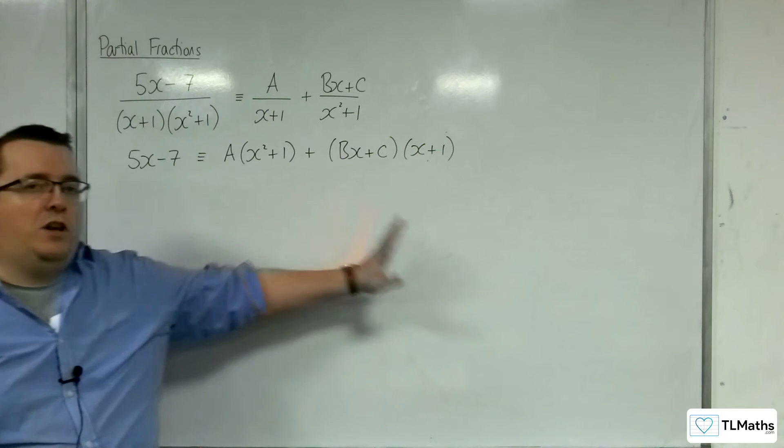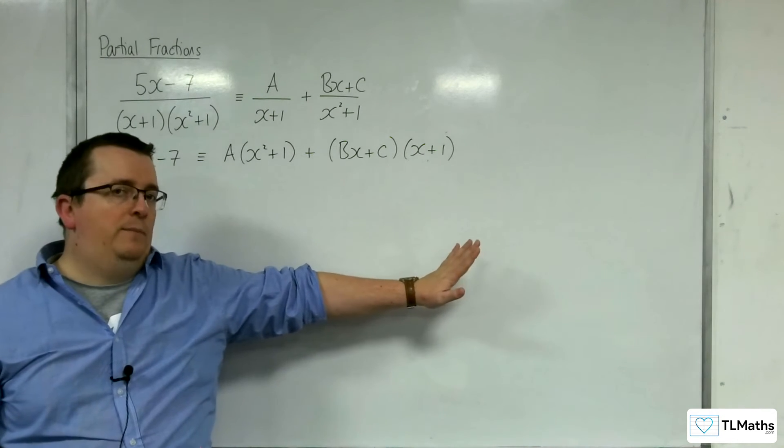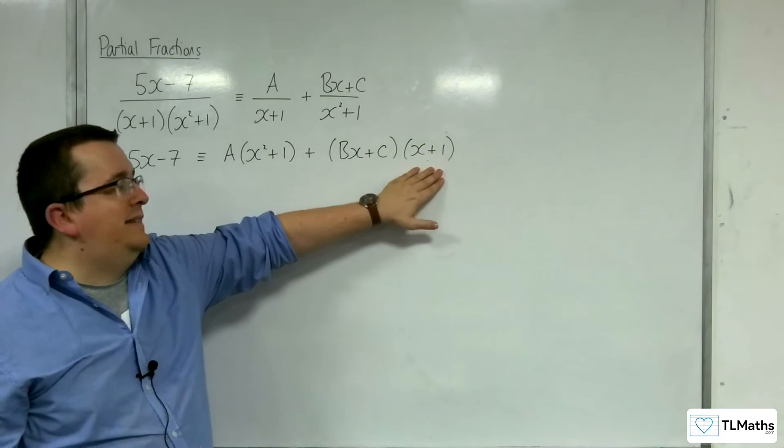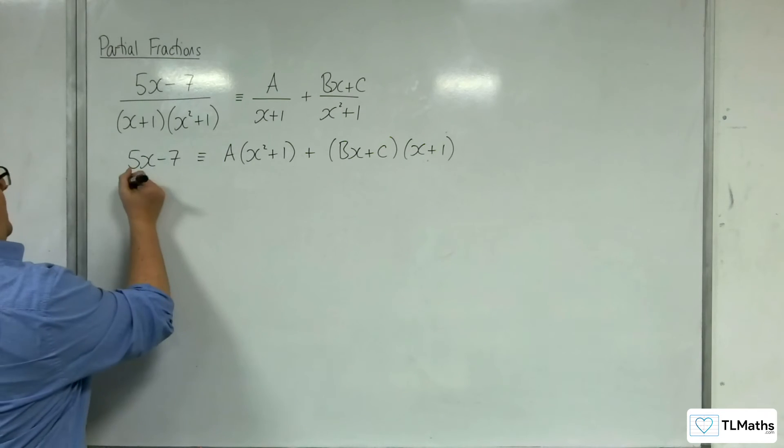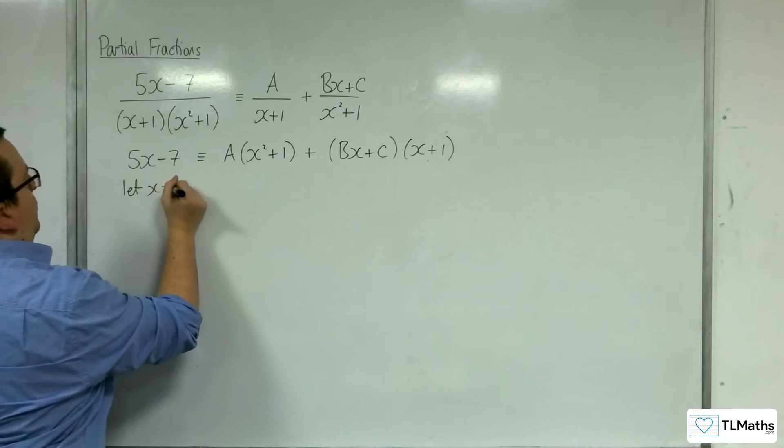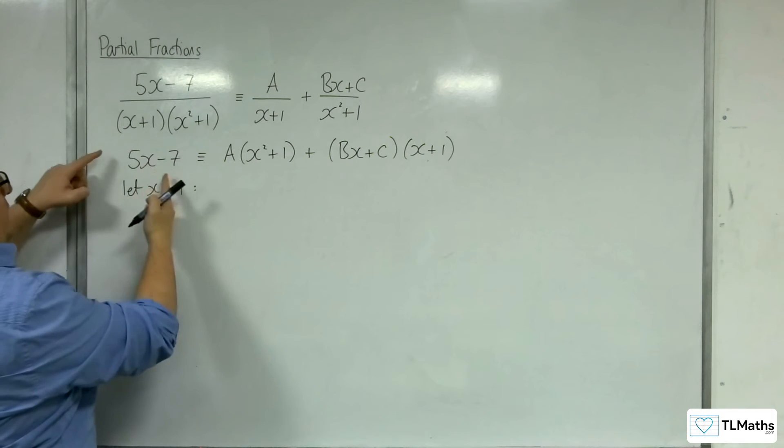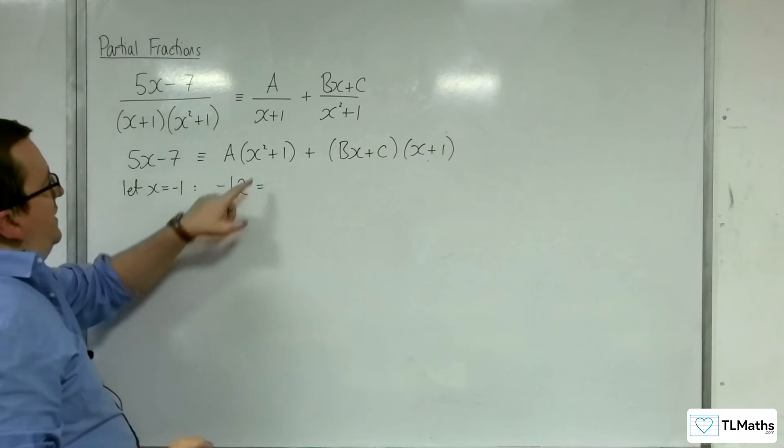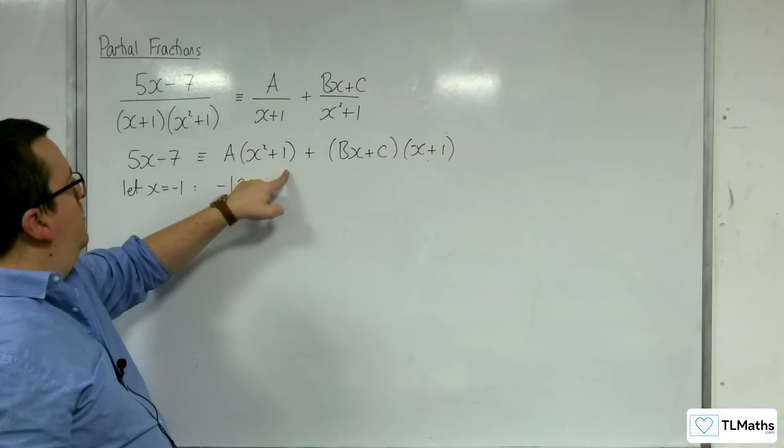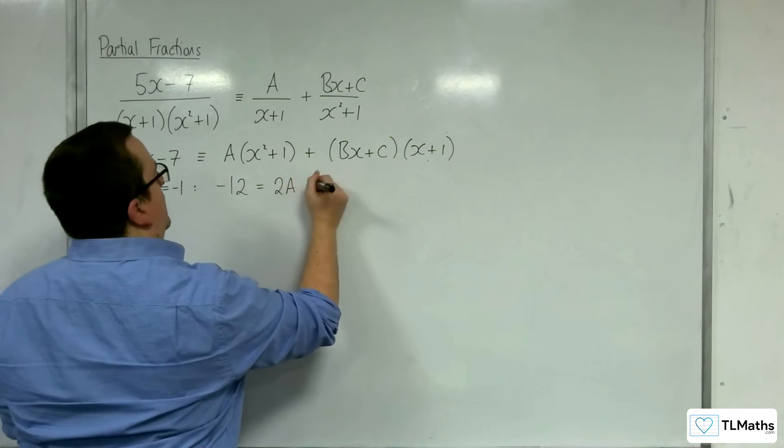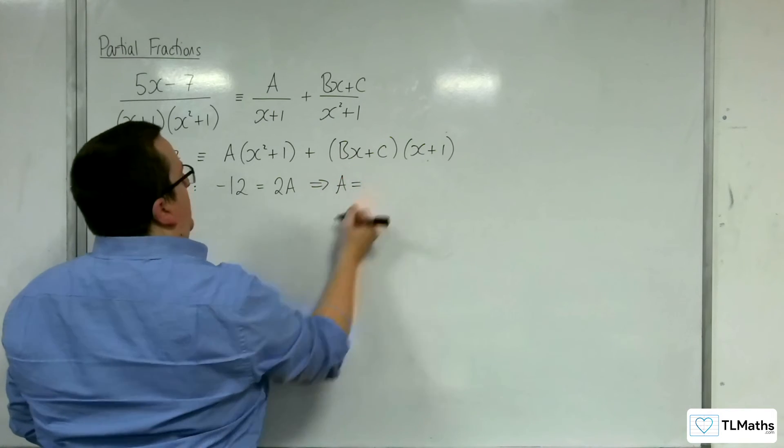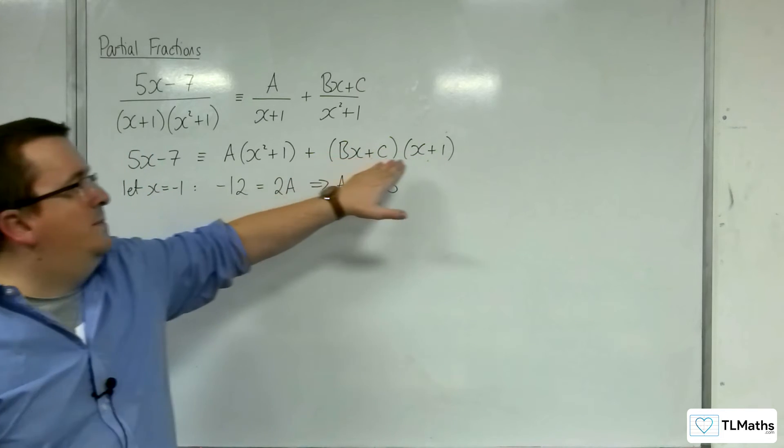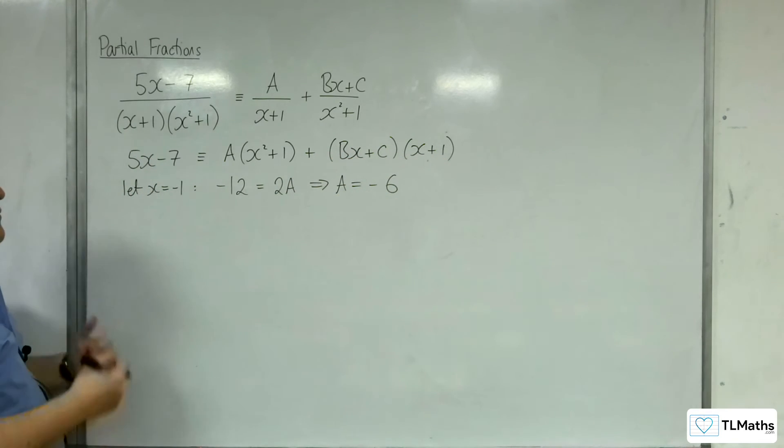So again, you could go about comparing coefficients. That's perfectly up to you. I prefer substituting values in. So first thing I would substitute in is x equals minus 1. So let x be minus 1. Now the left-hand side is going to be minus 5 take away 7, so minus 12. I'm going to get minus 1 squared, which is 1, plus 1 is 2. So I get 2A. So that means that A is going to have to be minus 6 because x equals minus 1 knocks out that term there.